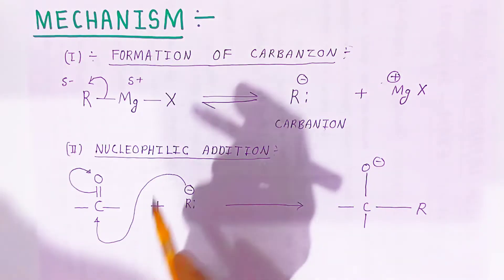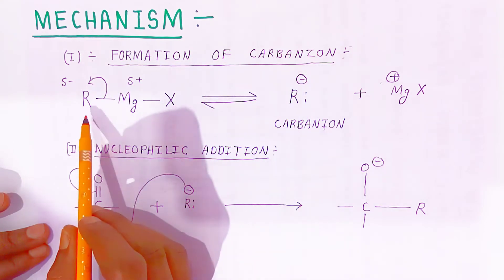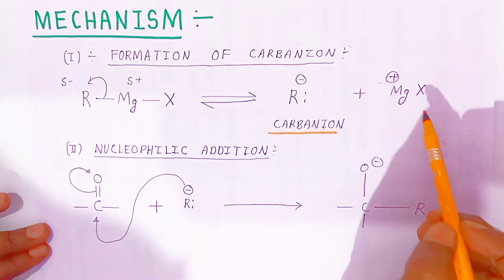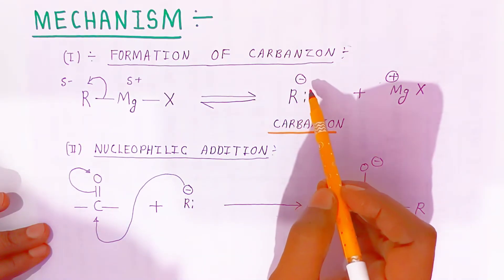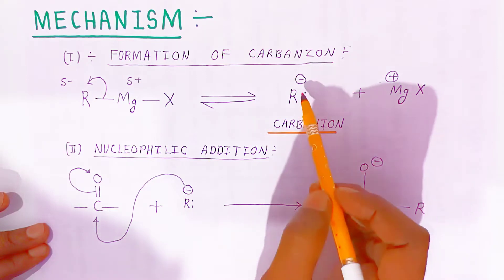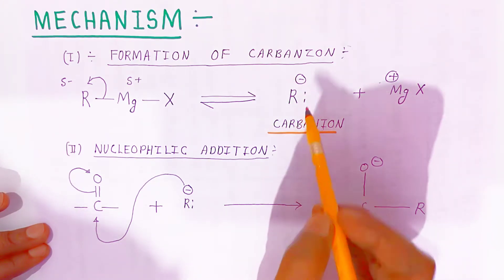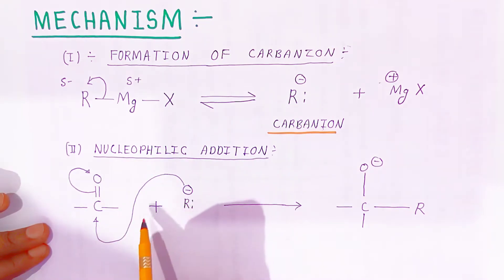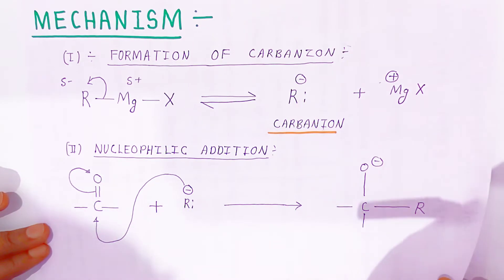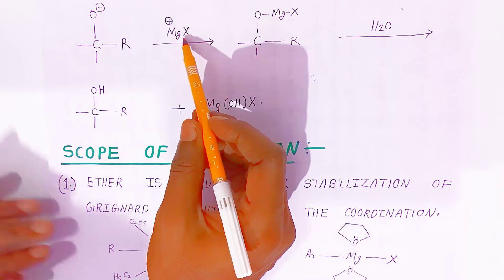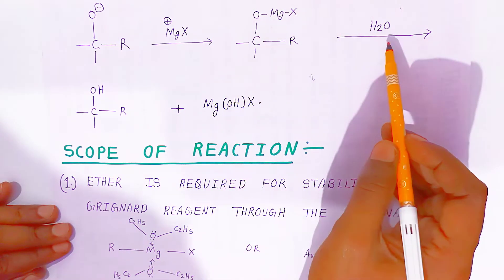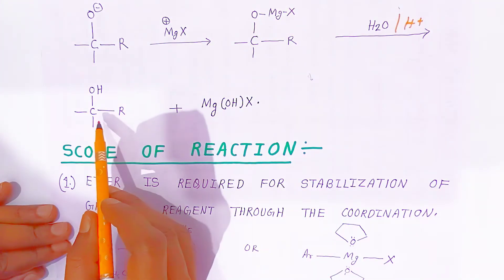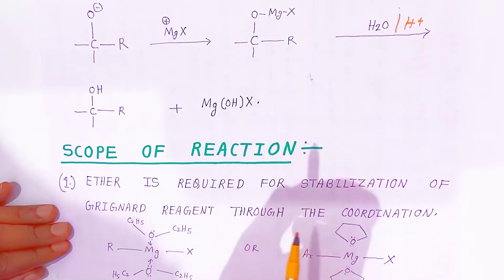Now we will see the mechanism. There is formation of a carbanion from alkyl magnesium halide when fission takes place. This alkyl carbanion with a negative charge acts as a nucleophilic carbon. It is a powerful base. The nucleophilic addition reaction occurs where R⁻ with two electrons forms an addition product with the carbonyl compound. In presence of magnesium halide, the addition product on acidic water hydrolysis gives the final product and magnesium hydroxide halide as a byproduct.